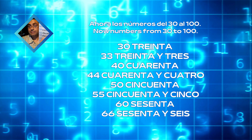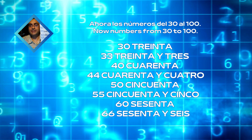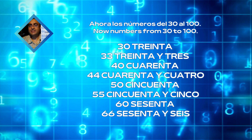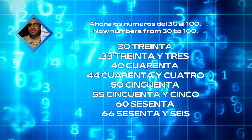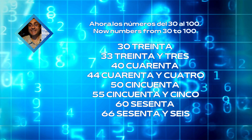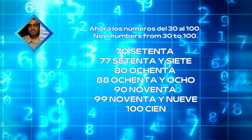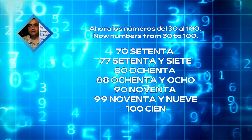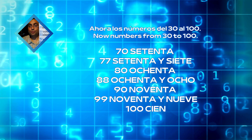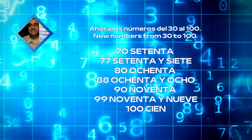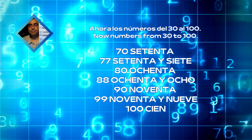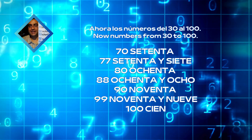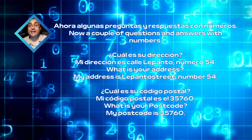Es diferente a los 20 al 29. It is different to numbers from 20 to 29. Otra vez. Again. 30, 33, 40, 44, 50, 55, 60, 66, 70, 77, 80, 88, 90, 99, 100.